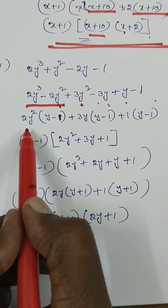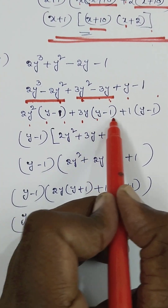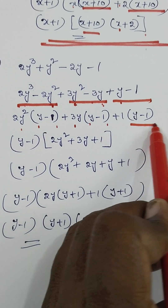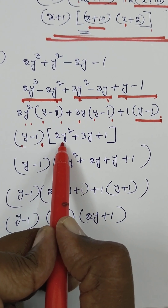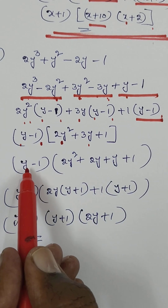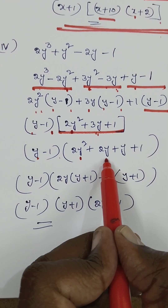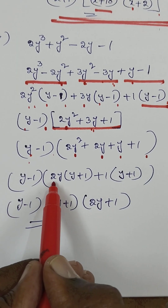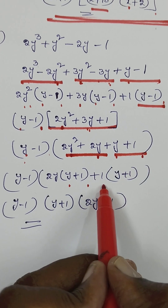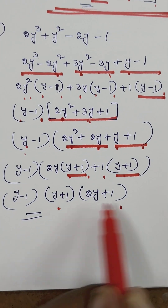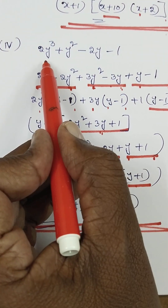So 2y squared is common in the first two terms, giving 2y minus 1. Then 3y is common giving y minus 1. Then 1 is common giving y minus 1. Total three terms have y minus 1 as common, remaining 2y squared plus 3y plus 1. Using the splitting method, write 3y as 2y plus y. Then 2y is common giving y plus 1, and 1 is common giving y plus 1. So y minus 1 into 2y plus 1 into y plus 1. These are the factors of the given polynomial.